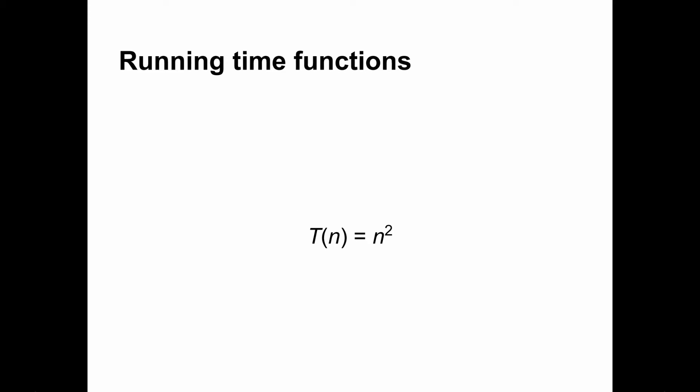The running time of an algorithm can be described by a function. This is normally a function of one variable, n, that indicates the size of the input. For example, for a sorting algorithm, n would be the length of the array being sorted. A function like t of n equals n squared, sometimes written simply as n squared, means that the time taken is the square of the length of the input. Running time functions generally increase with n, since processing larger inputs takes longer.